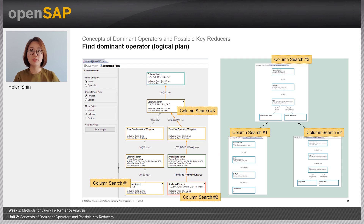When we look at ColumnSearch1's Logical Inner Plan, the base table T1 is ordered by T1.a in ascending order. After that, a limit operation is applied and it generates 20 rows. When you check ColumnSearch2's Logical Inner Plan, there is an inner join between ColumnTable T2 and T3. After the join is processed, there is aggregation — GroupBy is applied. And in ColumnSearch3, there is a left outer join between ColumnSearch1 and ColumnSearch2. After this join, the result is ordered by, and finally 20 rows are returned.